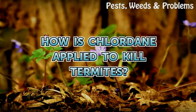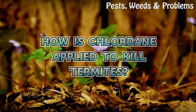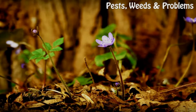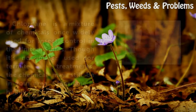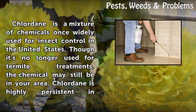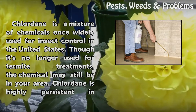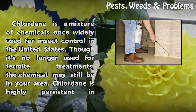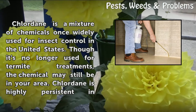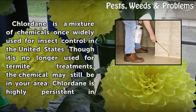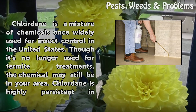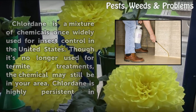How is Chlordane applied to kill termites? Chlordane is a mixture of chemicals once widely used for insect control in the United States. Though it's no longer used for termite treatments, the chemical may still be in your area.